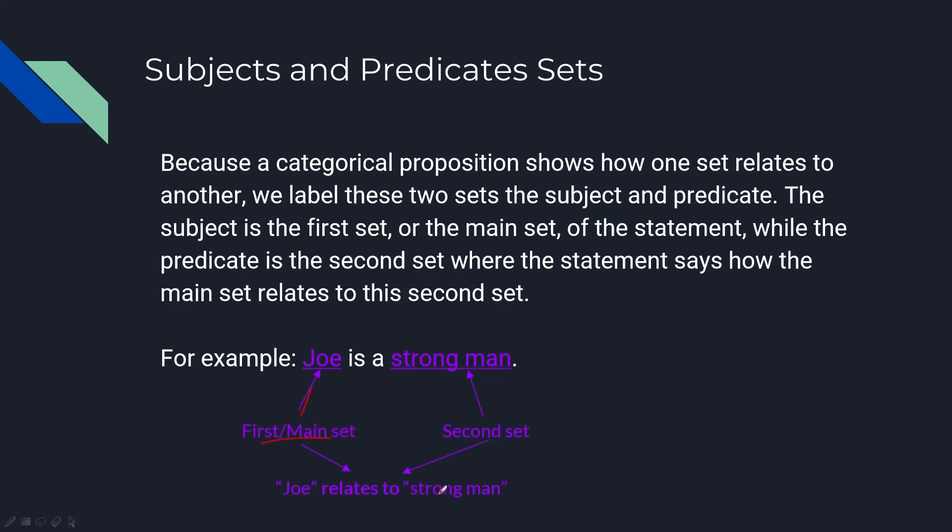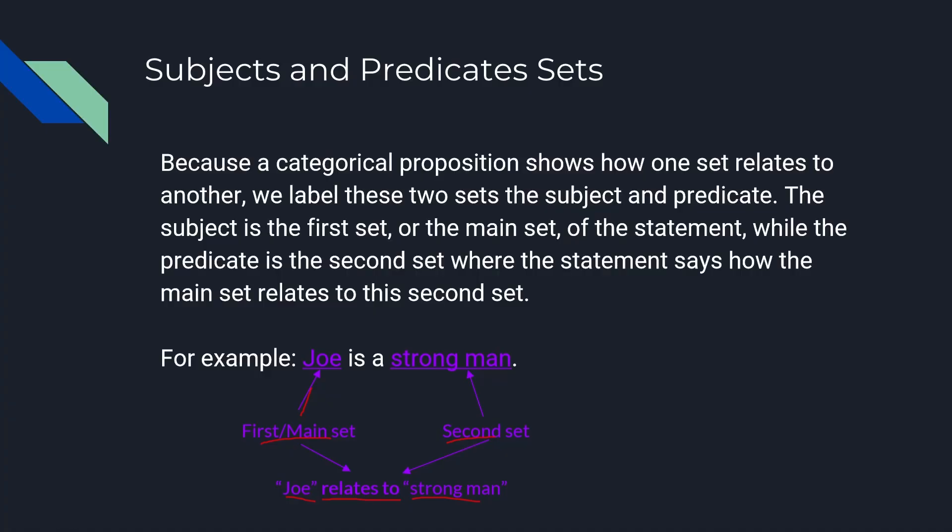For example, 'Joe is a strong man.' Joe is the first main set. 'Strong man' is the second set. Joe relates to strong man.